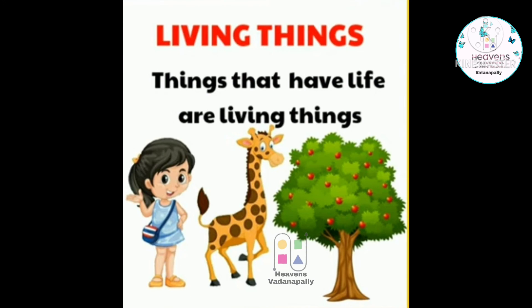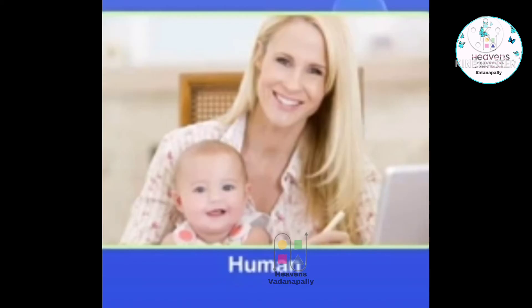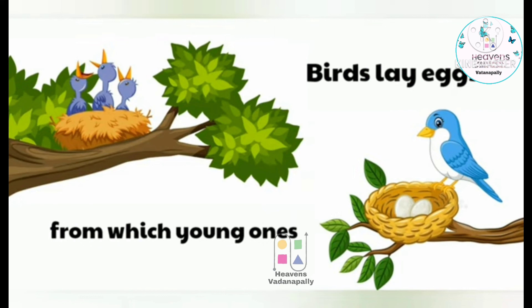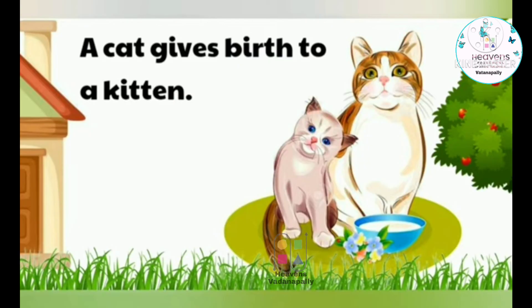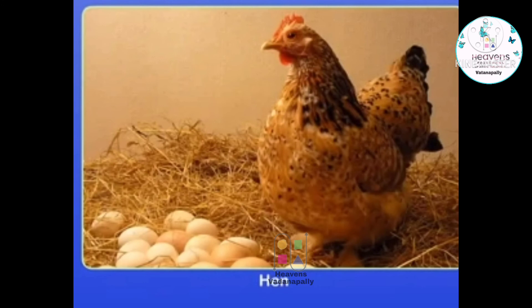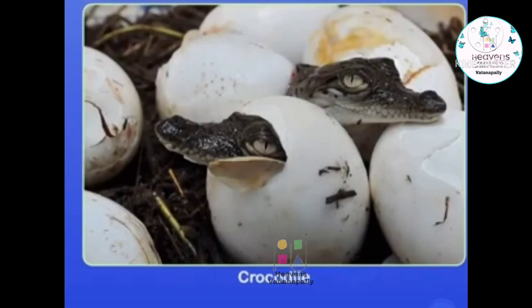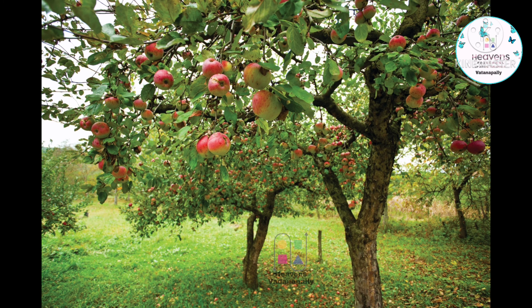Living things also reproduce — they bring forth their young babies. A woman gives birth to a baby. Like that, all animals give birth to their young ones. Some birds lay eggs, and these eggs hatch to bring their young ones. Lions give birth to cubs, cats give birth to kittens, chicks come out of hen eggs, dolphins give birth to their young ones, and crocodiles lay eggs from which the young ones come out. Plants can also reproduce — a small apple seed will grow into a big apple tree which produces many apples.